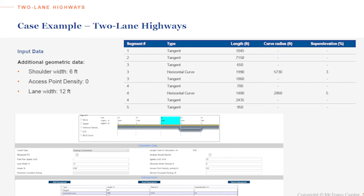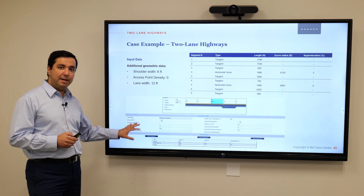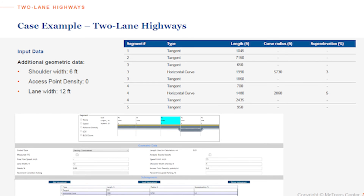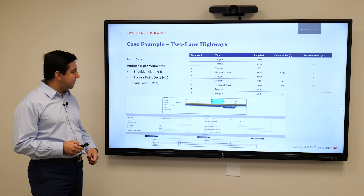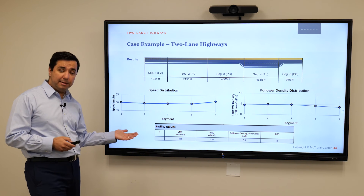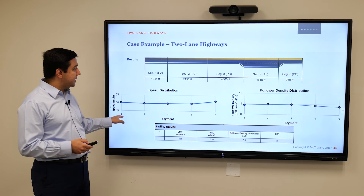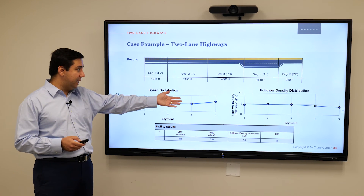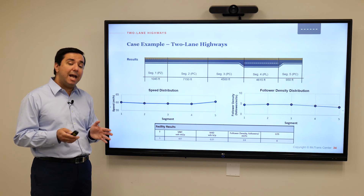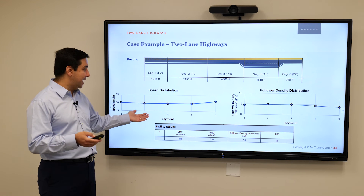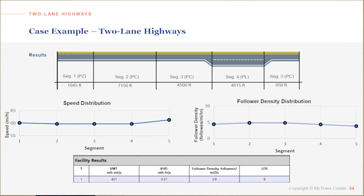When dealing with horizontal curves, we need to specify the radius and super elevation. This screenshot shows how we can do this in Highway Capacity Software, where all inputs are entered. Once that is done, the method can predict different MOEs either across segments — for example speed and follower density, which is our service measure — or aggregated across the facility. For this facility, the aggregated follower density is 3.9, which corresponds to level of service B. We can also see how it fluctuates segment by segment in the graph on the right side of the screen.